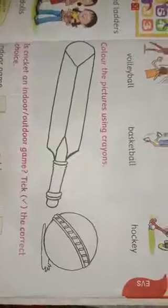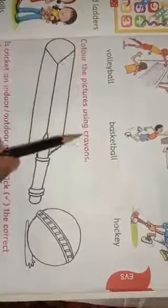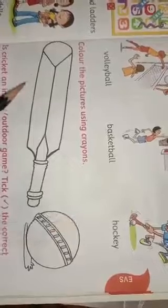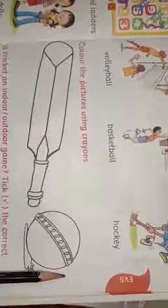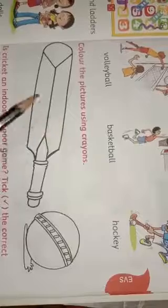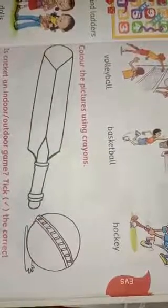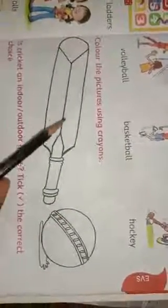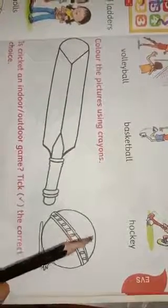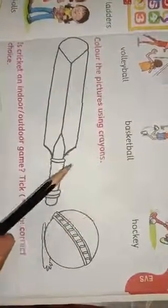So, these all are the examples of indoor and outdoor games. Then, what is the activity? Color the picture using crayon. Can you guess what is this? Yes, this is a bat and this is a ball. And which game uses a bat and ball? In cricket we use bat and ball. You can use crayon and color fill properly.